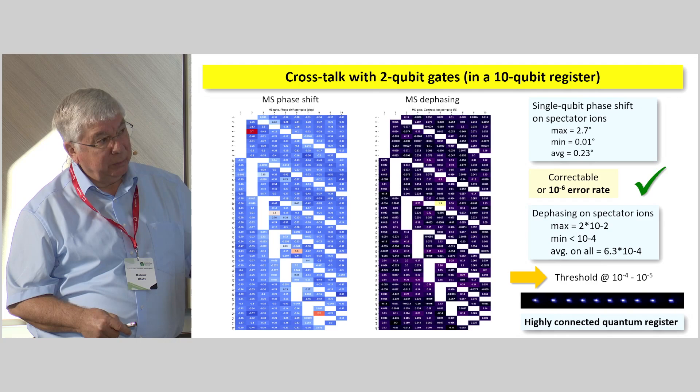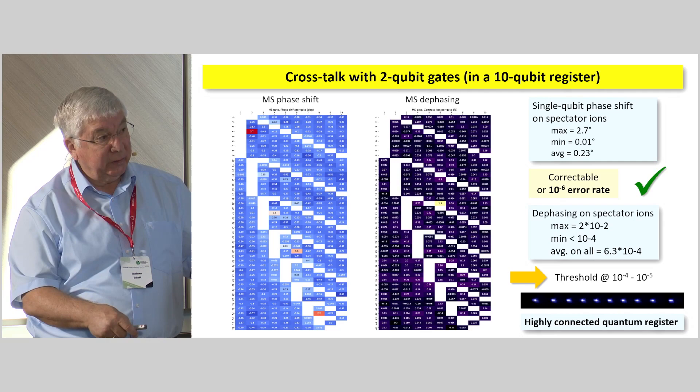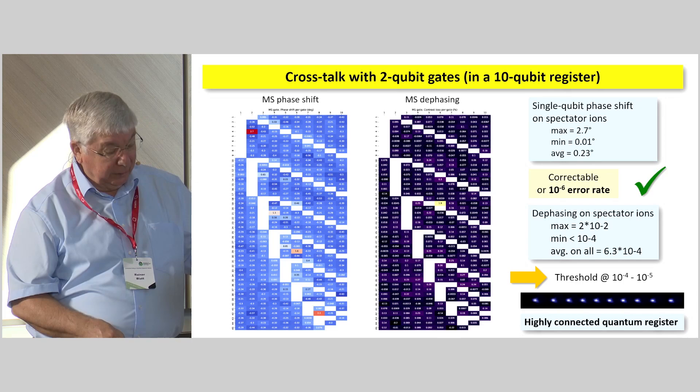The dephasing of the spectator ions needs to be down to at least 10^-4 or better than 10^-4. The average on all of that is at this time 6.3 times 10^-4. So this is where the current work is dedicated to improve these things, because we really need the threshold, which is below 10^-4, in order to get, finally, then to error-corrected systems.